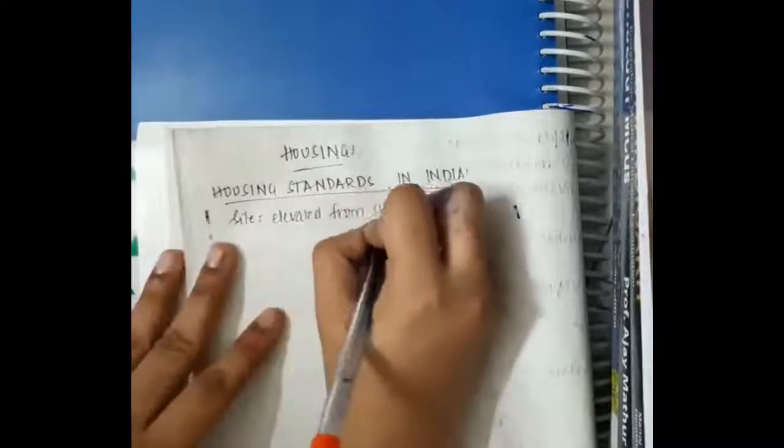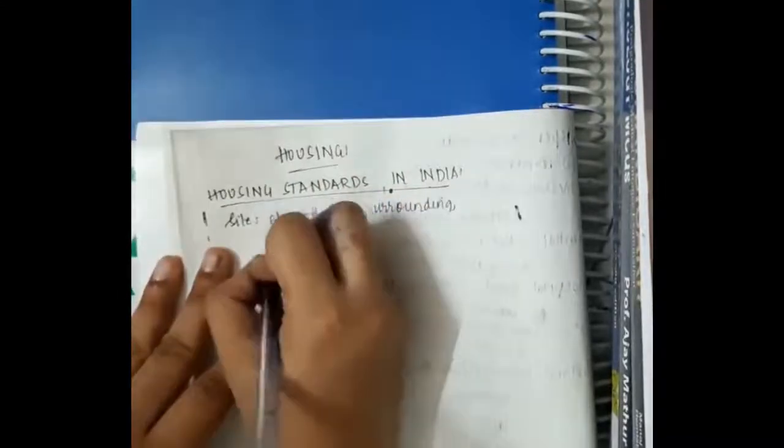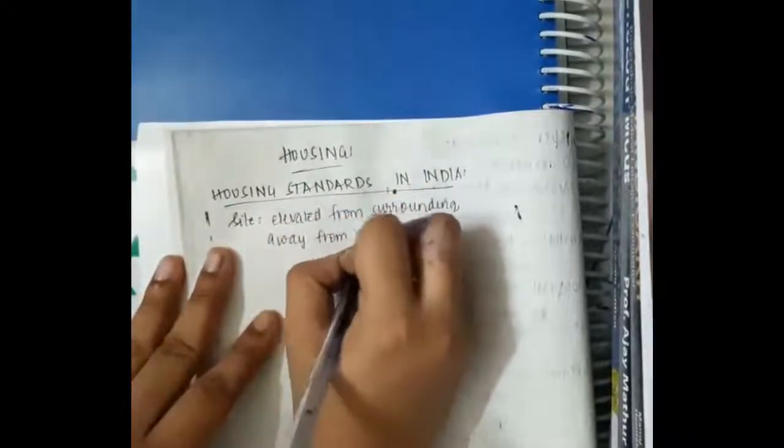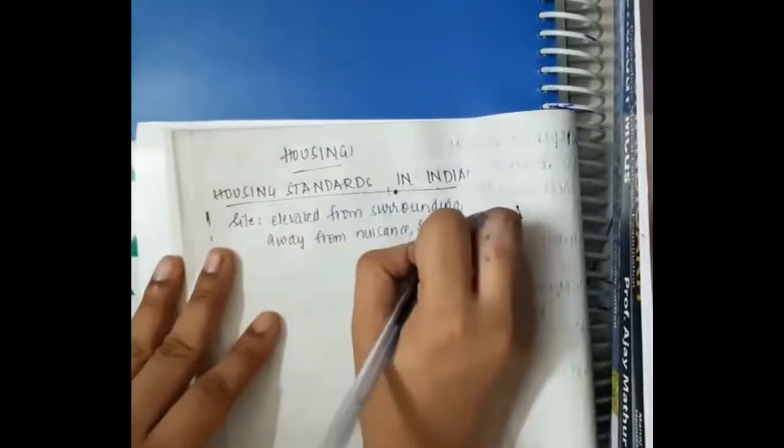Housing should be elevated from the surrounding. The site should be elevated from the surrounding. It should be away from nuisance. Subsoil water should be less than 10 feet.